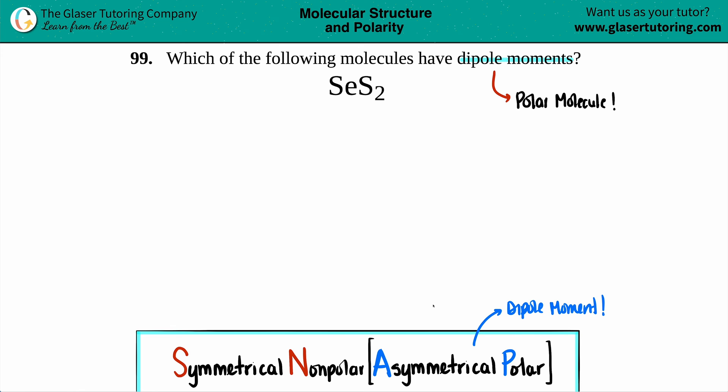There's a mix of answers. Some of you say symmetrical because you have two sulfurs around the selenium, but maybe some of you say this could be a trick, right? It could be asymmetrical, but we don't like to guess here. Chemistry, there's always a way to get the definite answer. And for these, take a step back, take a few seconds, draw the Lewis structure.